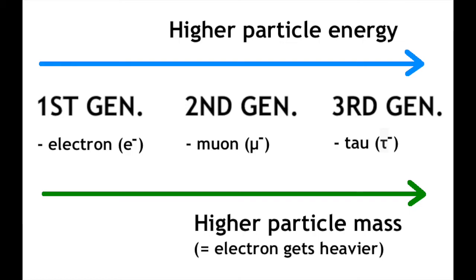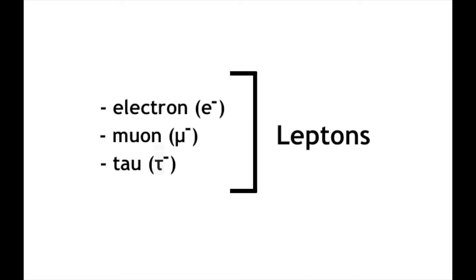So in the first generation, where the energy is lowest, you have the default electron, and in the second generation, where the energy is slightly higher, well, technically it's significantly higher, you have the muon electron, and in the third generation, where the energy is highest, you have the tau electron. But you just call them muon and tau particles. These three particles are called leptons.